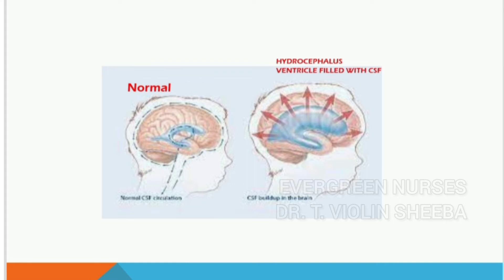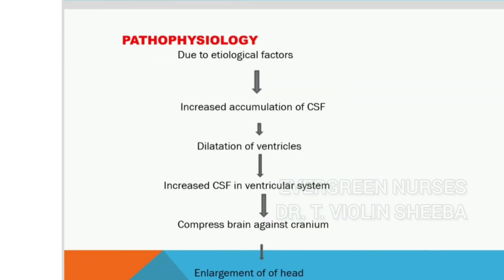In detail, due to etiological factors — either obstruction or poor absorption of cerebrospinal fluid — there is increased accumulation of cerebrospinal fluid within the ventricular system. This leads to dilatation of the ventricles and increased CSF pressure, which compresses the brain against the cranium. Finally, there will be enlargement of the head, vomiting, increased intracranial pressure, headache, and all signs of the syndrome will appear. This is the main pathophysiology of hydrocephalus.